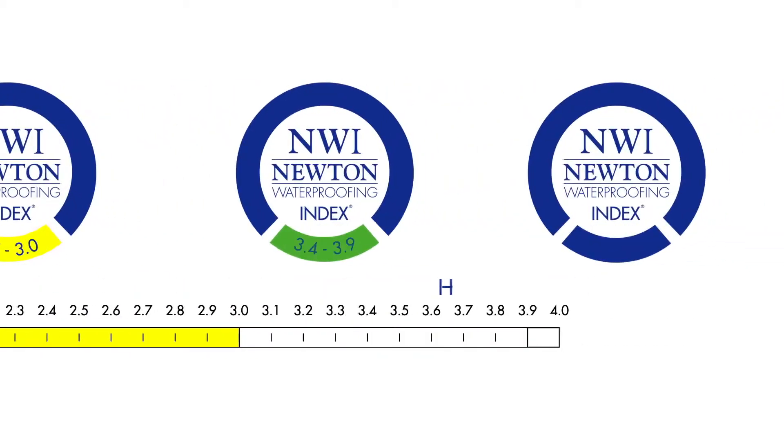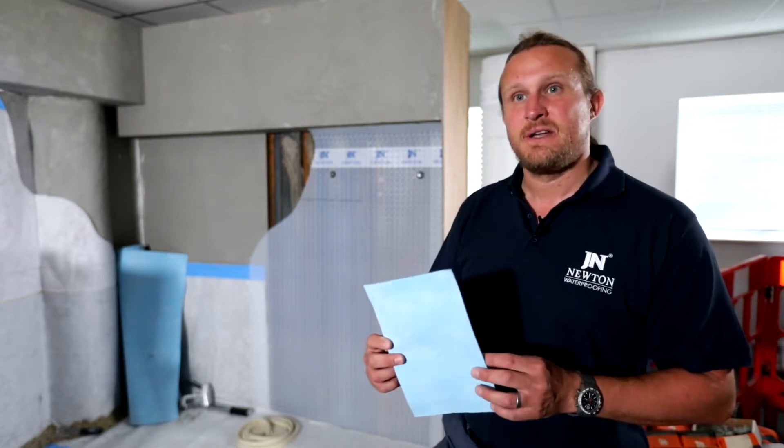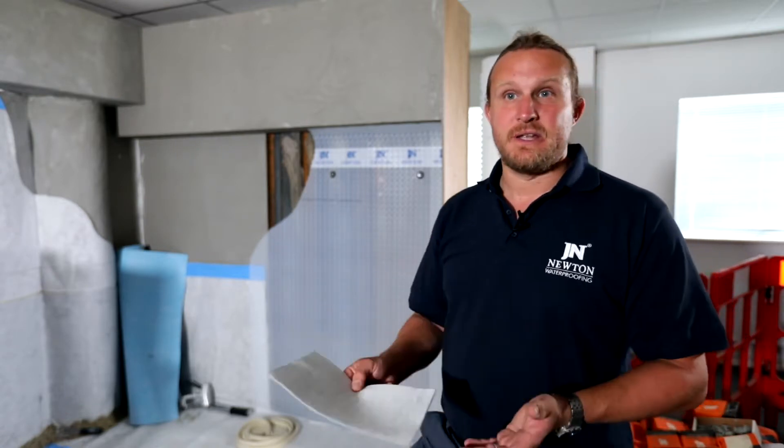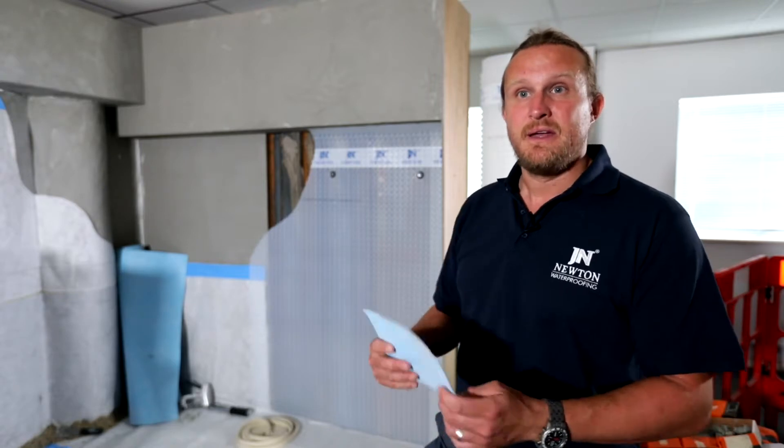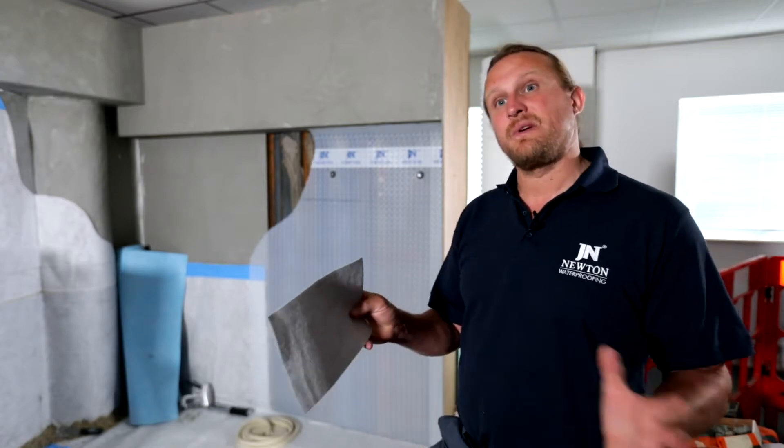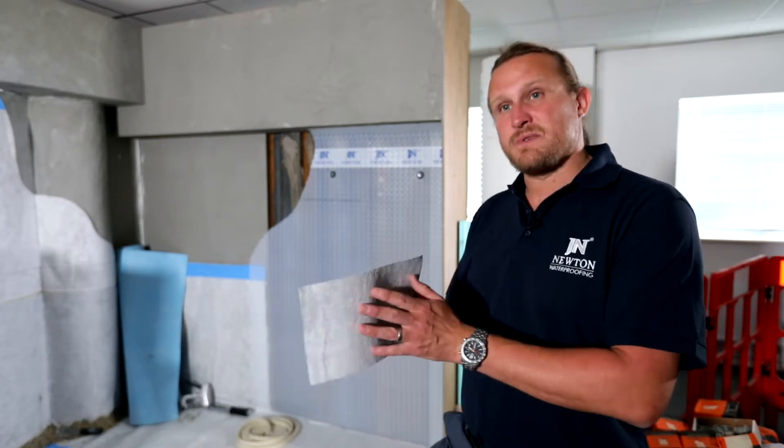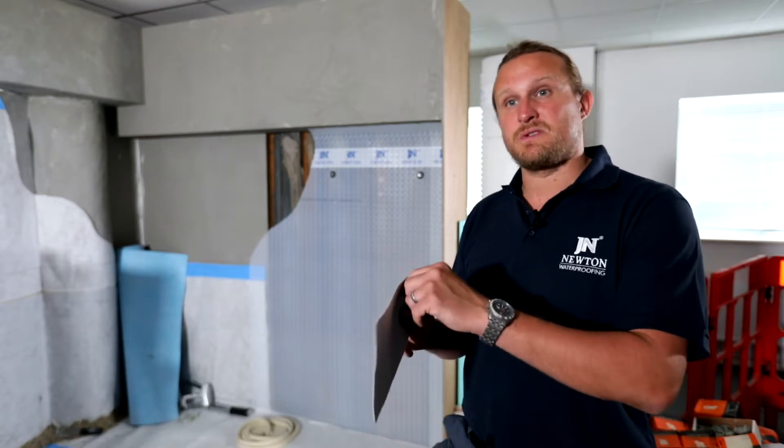An example of a Type A system would be a pre-applied fully bonded Newton 403 Hydro Bond. This would be pre-applied to the concrete oversight or void formwork. It can go on to property line construction, as we have an example of here, and it's very flexible. The concrete is then placed against this, forms a full bond, and stops water from migrating around the structure.